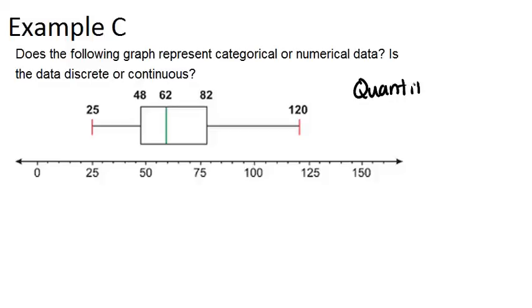You need quantitative data in order to be able to figure out a minimum, a maximum, a median, all those things that are numbers. And that's exactly what we see in a box and whisker plot.